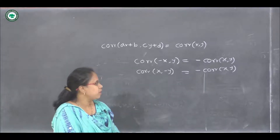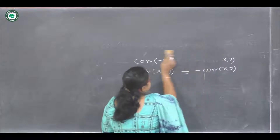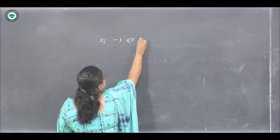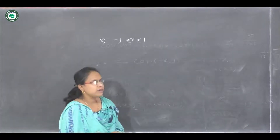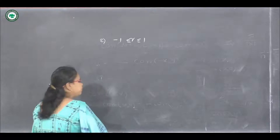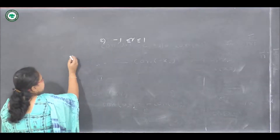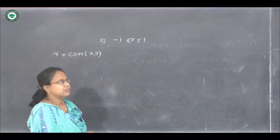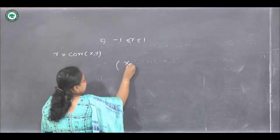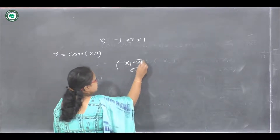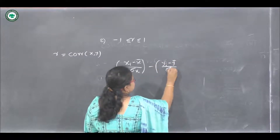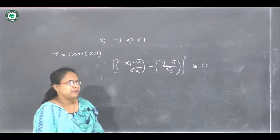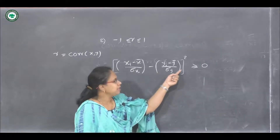Now we will see the next property of Karl Pearson's correlation coefficient. The second property is that r always lies between minus 1 and 1 — this is the range of r. Let us prove this property by two methods. For the first method, consider the expression (xi − x̄)/sigma x minus (yi − ȳ)/sigma y. We know that if we square any term, it is always greater than or equal to zero.